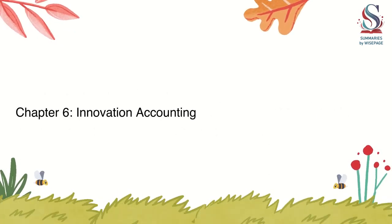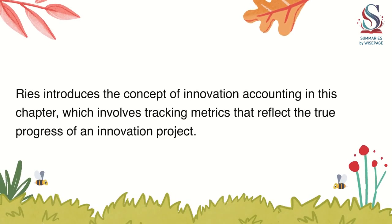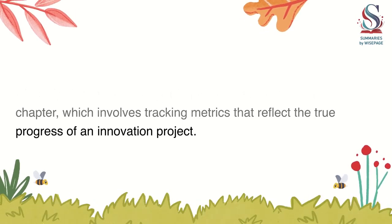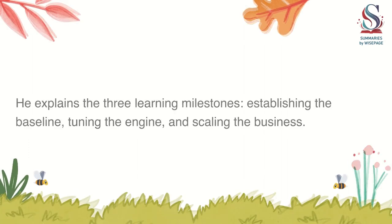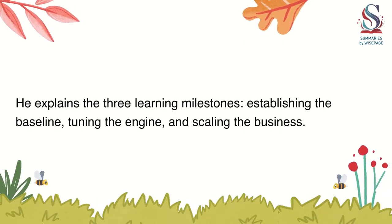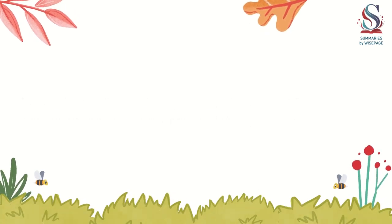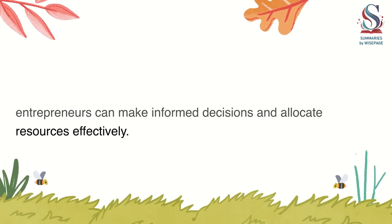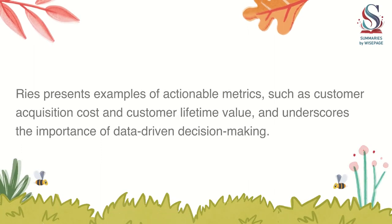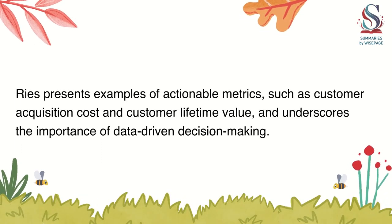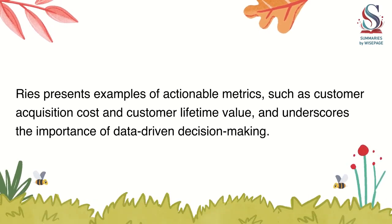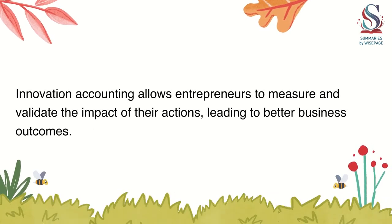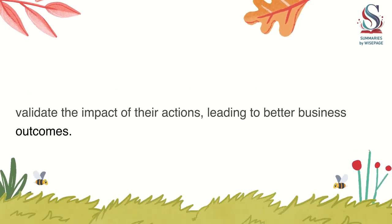Chapter 6: Innovation Accounting. Ries introduces the concept of innovation accounting, which involves tracking metrics that reflect the true progress of an innovation project. He explains the three learning milestones: establishing the baseline, tuning the engine, and scaling the business. By tracking actionable metrics aligned with these milestones, entrepreneurs can make informed decisions and allocate resources effectively. Ries presents examples of actionable metrics, such as customer acquisition cost and customer lifetime value, and underscores the importance of data-driven decision-making. Innovation accounting allows entrepreneurs to measure and validate the impact of their actions, leading to better business outcomes.